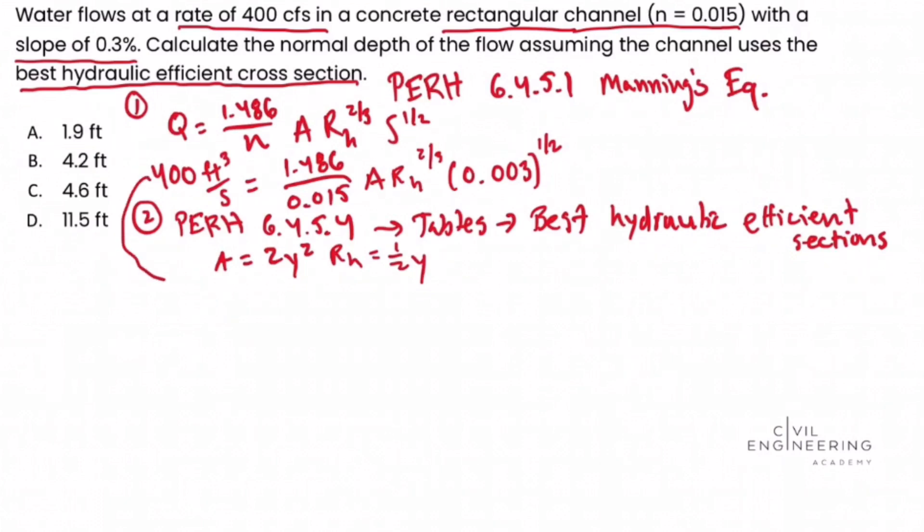So if we plug these variables back in to Manning's equation, we now have everything we need and we can solve for the depth. Let's go ahead and plug everything back in. We have 400 cubic feet per second equal to 1.486 over 0.015 times the area. Well, we said that was 2y squared. We'll use parentheses just to keep everything straight. The hydraulic radius, well, we said that was 1 half y, right?